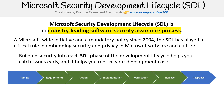So talking about these phases — you have training, requirements, design, implementation, verification, and release response. If you wanted to implement this yourself, they have a big white paper, like a PDF you can read through. But it's just a business process saying the sooner we implement security into our pipeline, the sooner we can reduce security risks. This is called pushing left — because the farther left you start implementing security, the earlier on, the better your security will be in your entire pipeline.